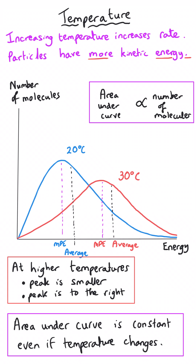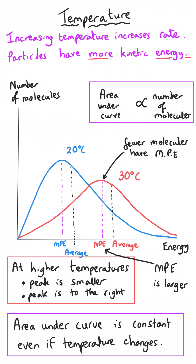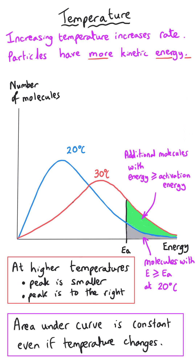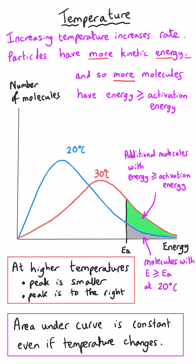At a higher temperature, the average energy increases but the peak is more squashed and smaller, so fewer molecules will have the most probable energy, but that most probable energy will be a higher value. Comparing the new curve at higher temperature, we can see the activation energy doesn't change, but the area under the red curve to the right of the activation energy has increased — more molecules now have energy greater than or equal to the activation energy, so the rate of reaction goes up.